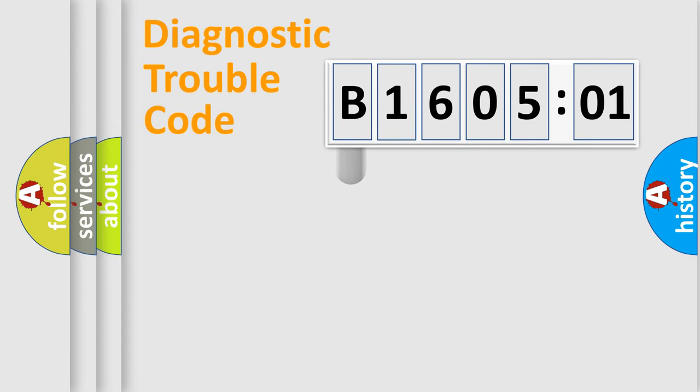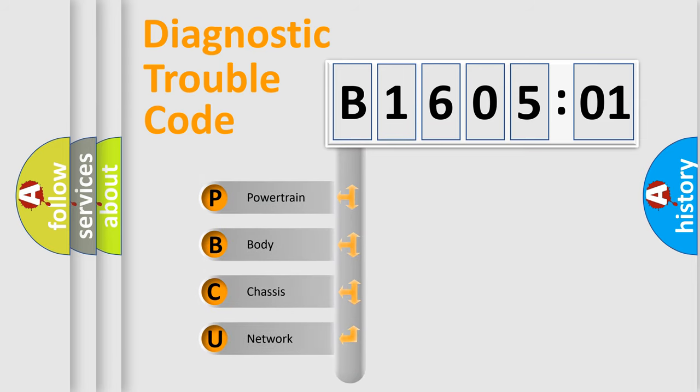First, let's look at the history of diagnostic fault code composition according to the OBD2 protocol, which is unified for all automakers since 2000. We divide the electric system of automobile into four basic units.